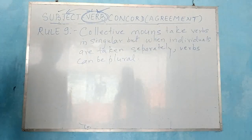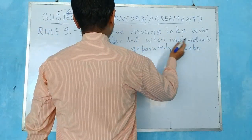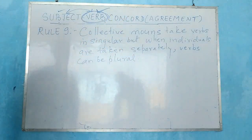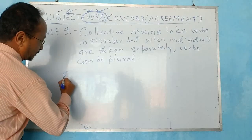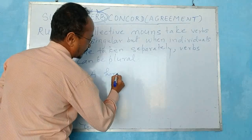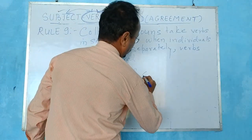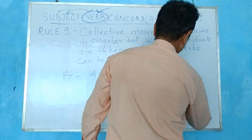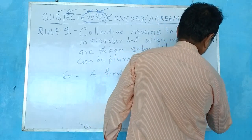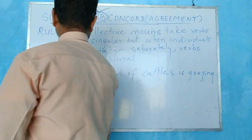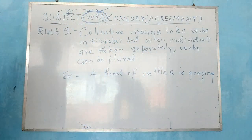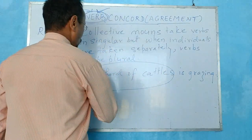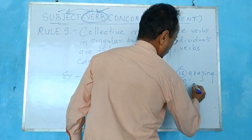Rule number nine: collective nouns take verbs in singular, but when individuals are taken separately, verbs can be plural. For example: 'A herd of cattle is grazing.' It is taken collectively, so the verb here is a singular verb.